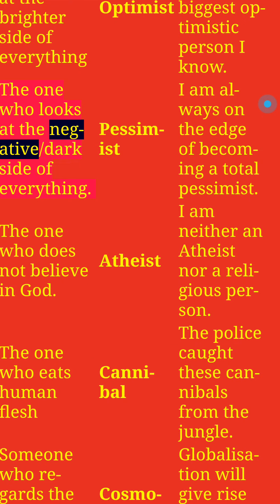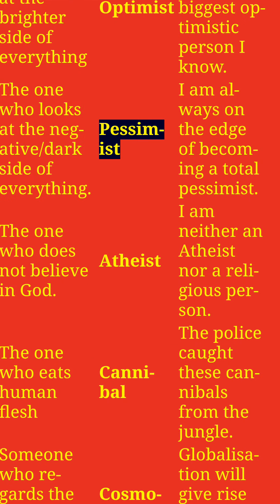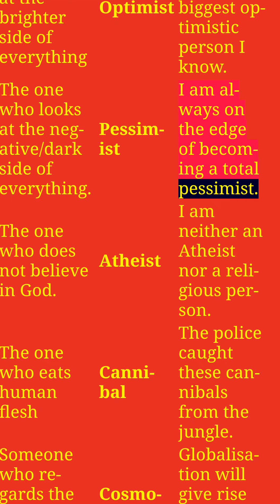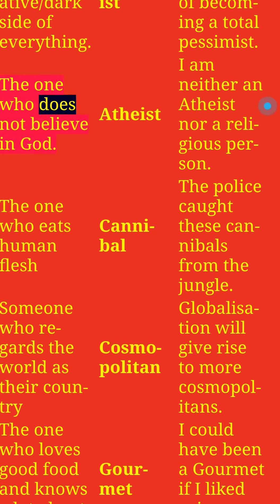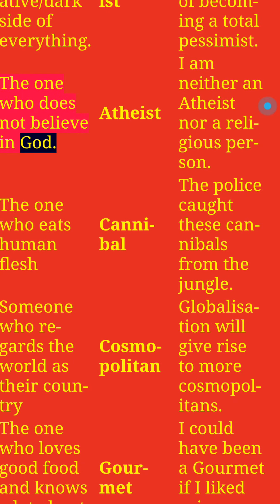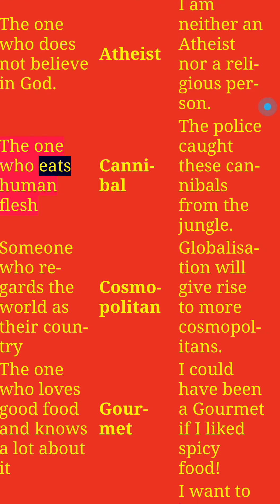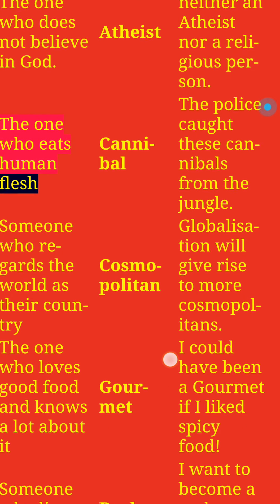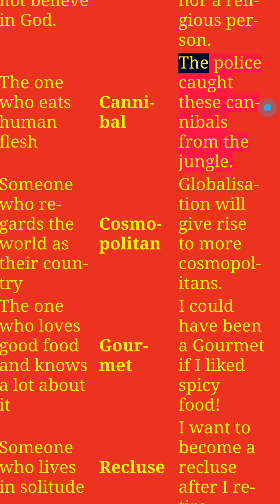The one who looks at the negative dark side of everything: Pessimist. I am always on the edge of becoming a total pessimist. The one who does not believe in God: Atheist. I am neither an atheist nor a religious person. The one who eats human flesh: Cannibal. The police caught these cannibals from the jungle.